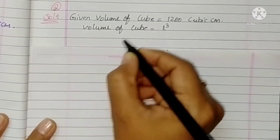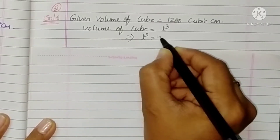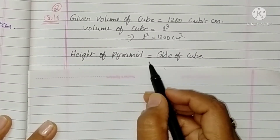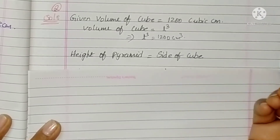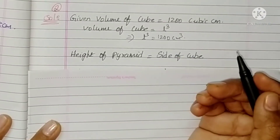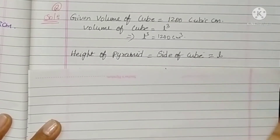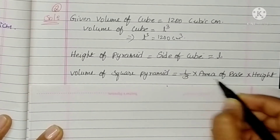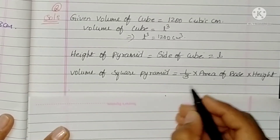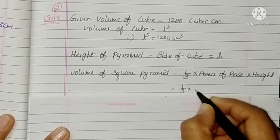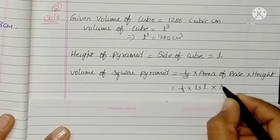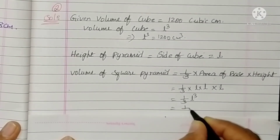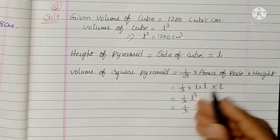Volume of cube formula is L cube, so L cube = 1200 cubic centimeters. The height of the pyramid equals the side of the cube, which is L. Volume of square pyramid = 1 by 3 into area of base into height = 1 by 3 into L into L into L = 1 by 3 into L cube = 1 by 3 into 1200.